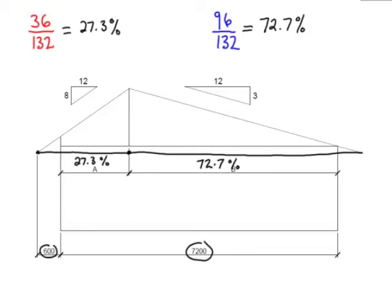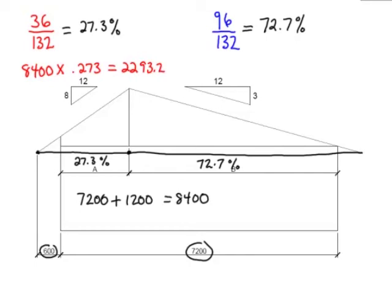Building plus 2 overhangs. So 7,200 plus 1,200 equals 8,400. So on the steep side, it would be 8,400 times .273 is equal to 2,293.2. And on the right side, it would be 8,400 times .727%, and this is equal to 6,106.8.